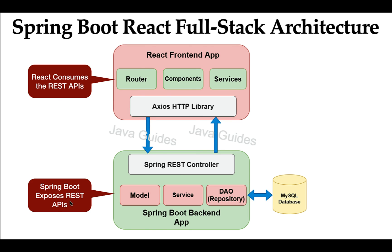The React front-end application consumes the REST APIs exposed by the Spring Boot backend. In the React front-end application we create components, services, and routing. React is not concerned with an HTTP library — we have to use a third-party HTTP library to make HTTP calls. In this project we are going to use the Axios HTTP library to make REST API calls in the React application. We are going to use JSON format to exchange data between the React front-end and the Spring Boot backend.